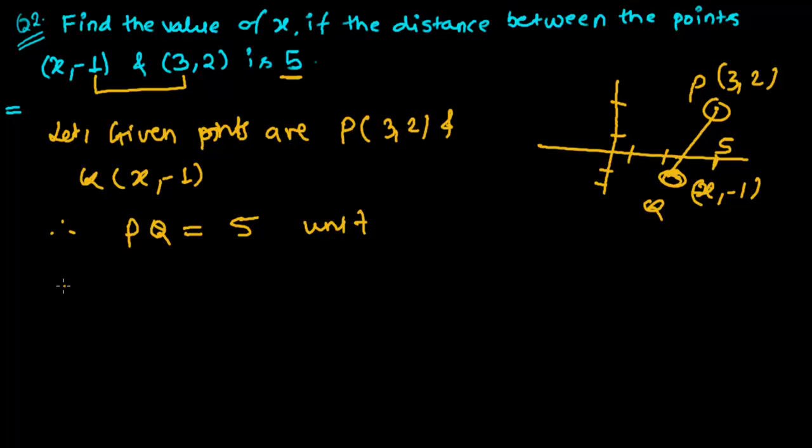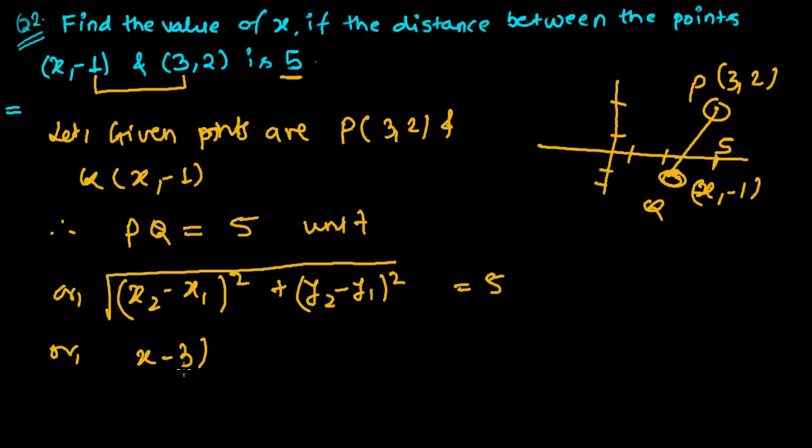It is root over is 5. Or what we can write, x₂, let's suppose this is x₂, y₂ and this is x₁, y₁. So (x - 3)² plus (-1 - 2)², minus 2 whole square.